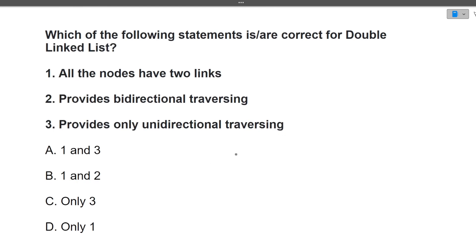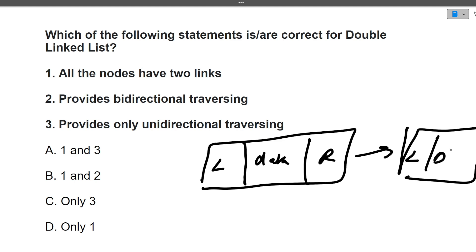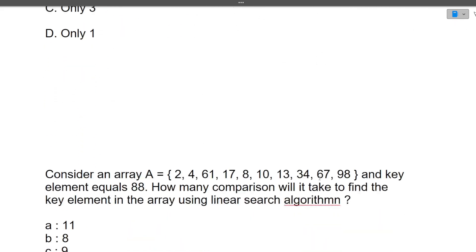So doubly linked list, let's just see. First we have in doubly linked list, we have left pointer, we have data, and we have right pointer. And similarly we have next node also: left, data, right. So all the nodes have two links, this is correct. Provides bi-directional traversing, yes it, bi-directional traversing is possible in doubly linked list. Provides only unidirectional traversing, no this is not correct. So 1 and 2 is correct, so option B is correct here. So I hope this question is clear to you. Let's move towards the next question.